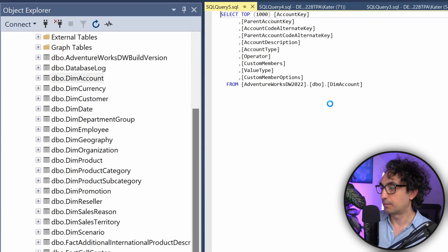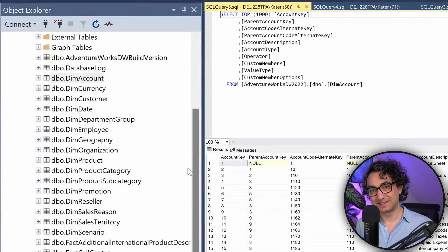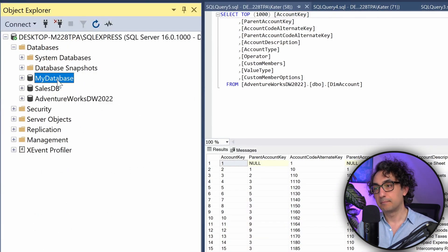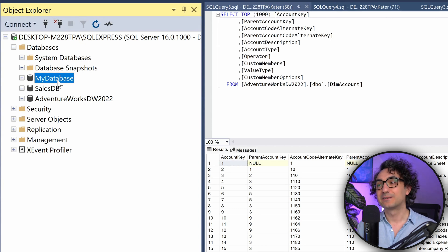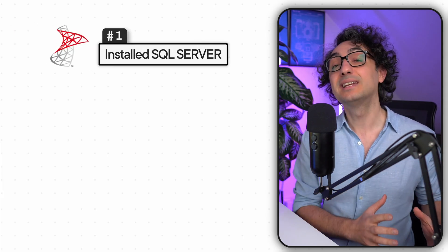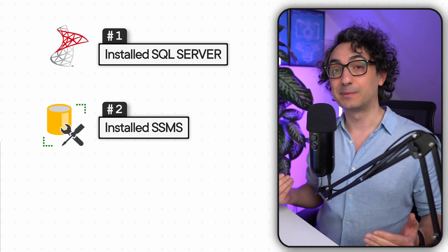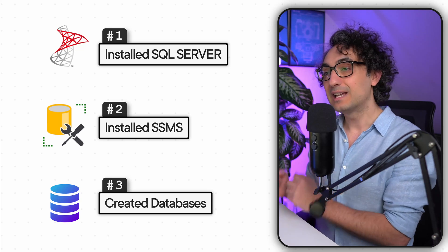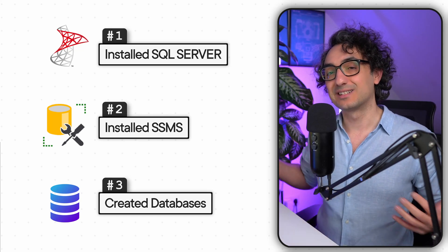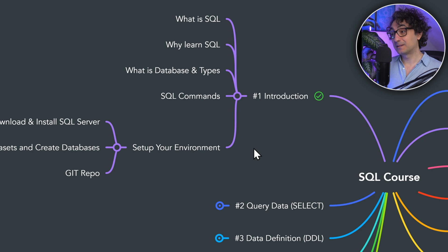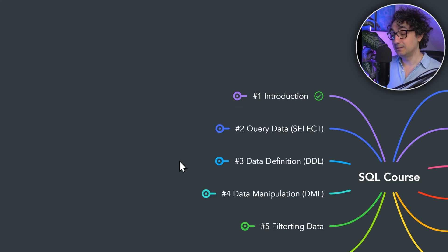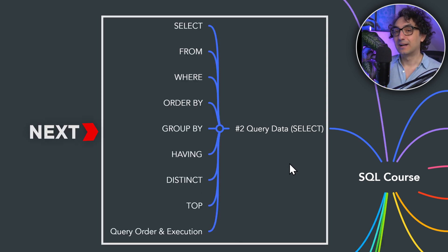Now you have three databases, but our focus will be on the first two: my_database and sales_db. We've also learned two ways to import databases into SQL Server. To summarize: we have SQL Server Express running locally, SSMS as our client to interact with the database, and our two practice databases ready to go. We're all set to start the first chapter and learn how to query our data.